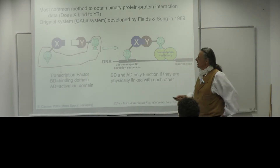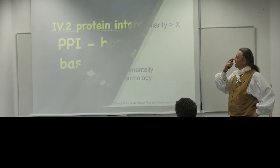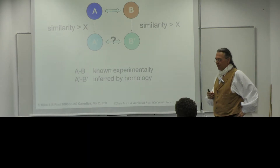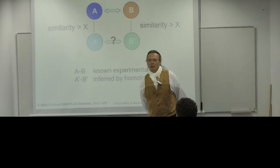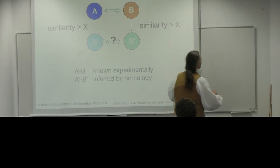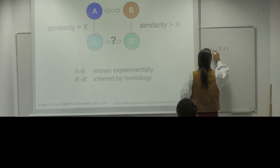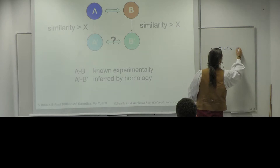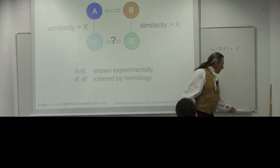The simplest way of inferring protein interactions is by homology. In the story of typical homology-based inference, we always have a query protein Q and a protein with an experimental annotation. You have a sequence similarity between them that is larger than some threshold, and if it is larger, then you can do homology-based inference.